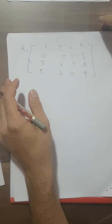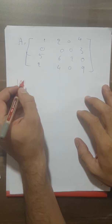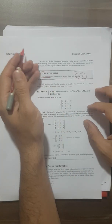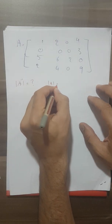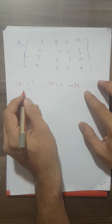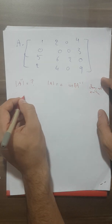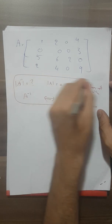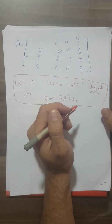Continuing part A in this video, we are going to find A inverse. Do not forget this theorem: if the determinant is equal to zero, then the inverse of the matrix does not exist. So if you want to find the inverse, the determinant must not equal zero. This example explains this theorem.